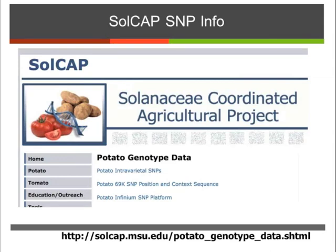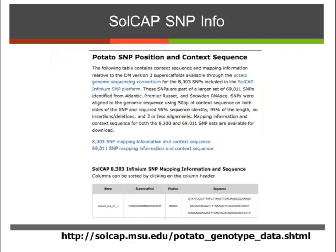The SOLCAP site also has some data that's accessible. We have some intravarietal SNPs detected in the Sanger population, but these aren't nearly as rich as our infinium data. We provide for download the 69,000 as well as the 8,300 SNPs that are on the infinium array. You can go to the SOLCAP website and click on this link — this is the 8,300 SNP mapping information and the context sequence.